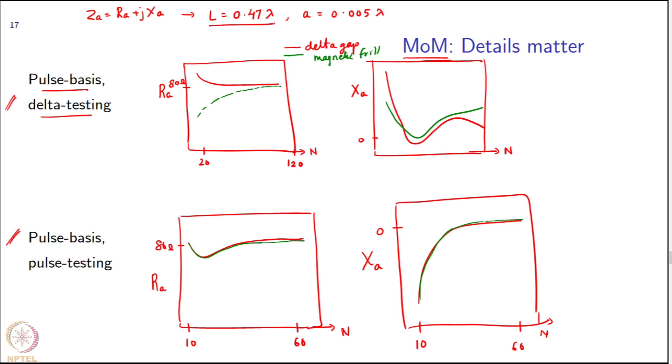The choice of 0.47 lambda is because you are getting a reactive part of nearly zero, and the R_A comes out to be 75 to 80 ohms which is easy enough to match in a regular RF circuit.